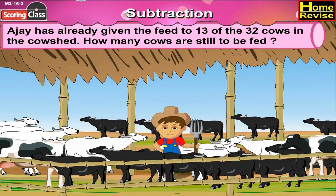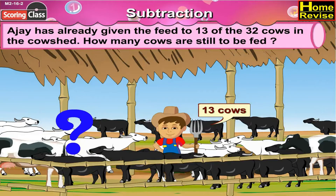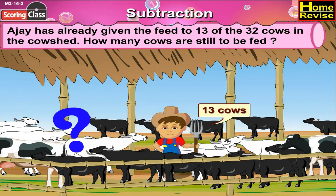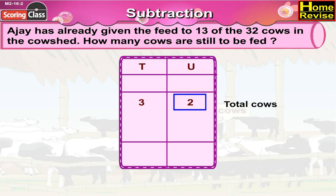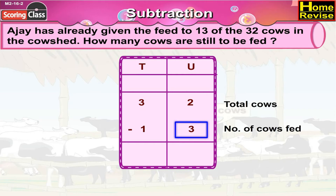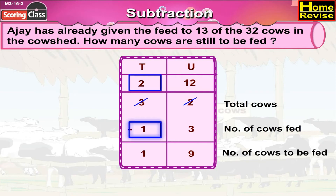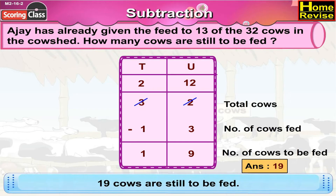Word problem: Ajay has already given feed to 13 of the 32 cows in the shed — how many are still to be fed? Ajay has fed 13 cows, so we subtract 13 from 32: 3 tenths 2 units minus 1 ten 3 units. 3 tenths 2 units becomes 2 tenths 12 units. 12 units minus 3 units is 9 units, and 2 tenths minus 1 ten is 1 ten, so 32 minus 13 is 19. There are 19 cows still to be fed.